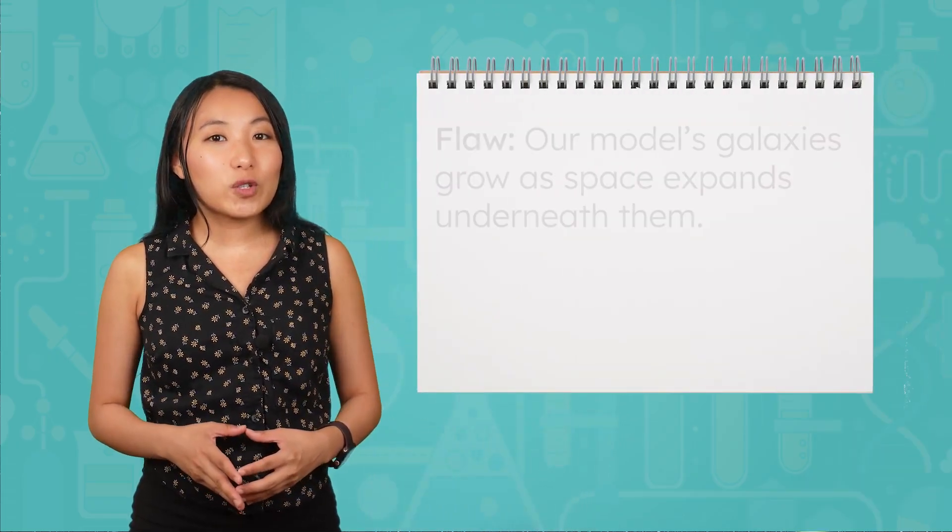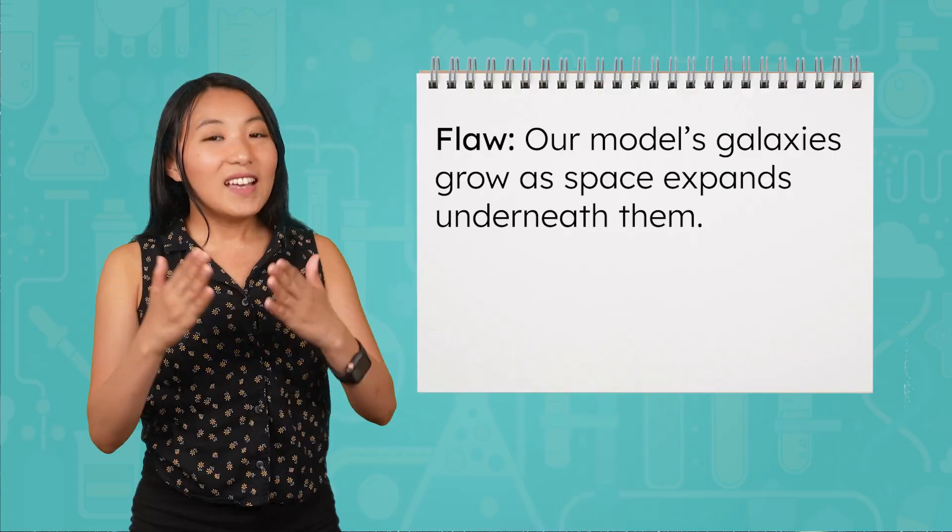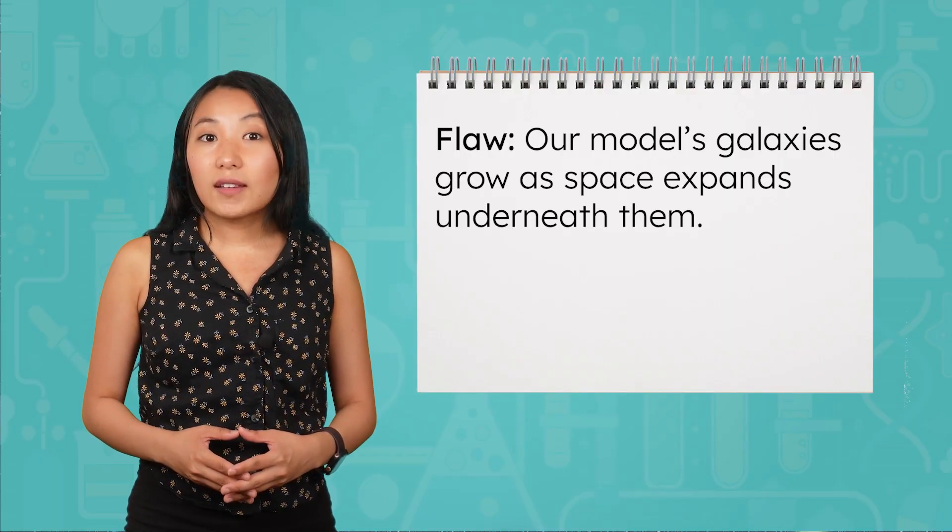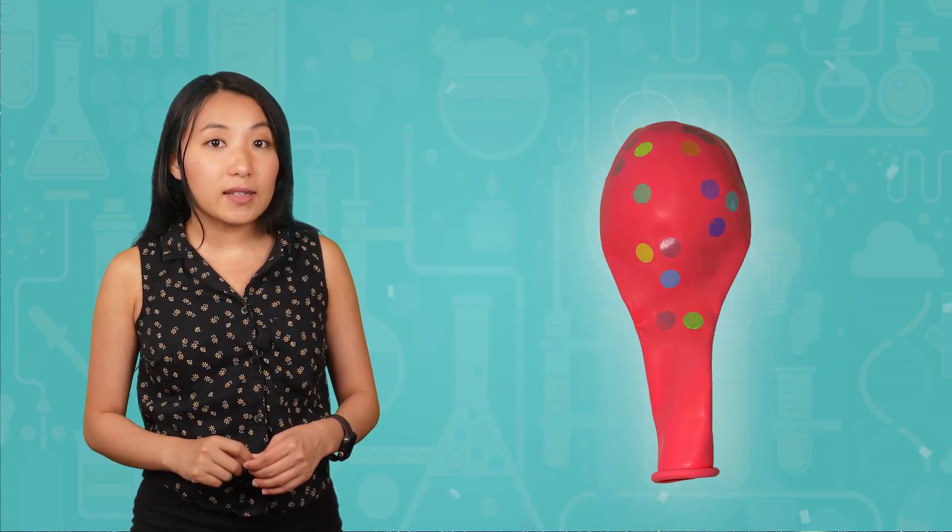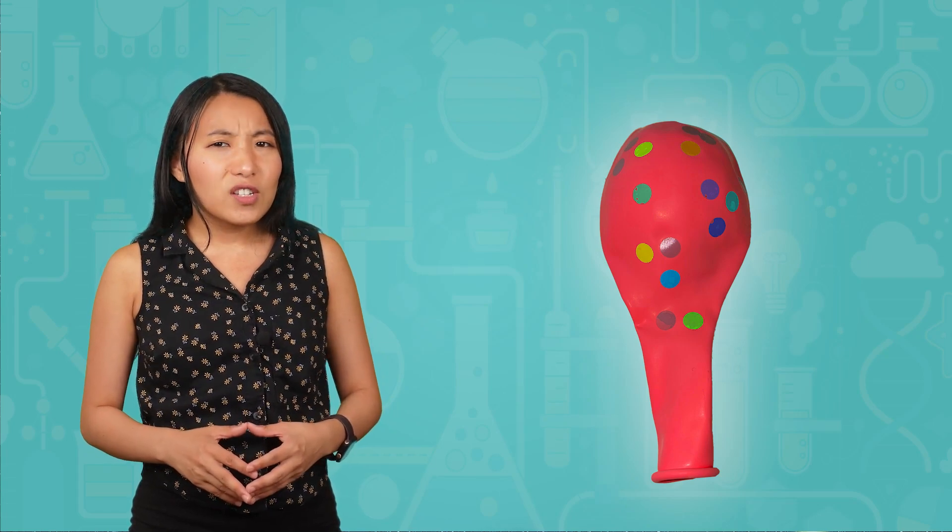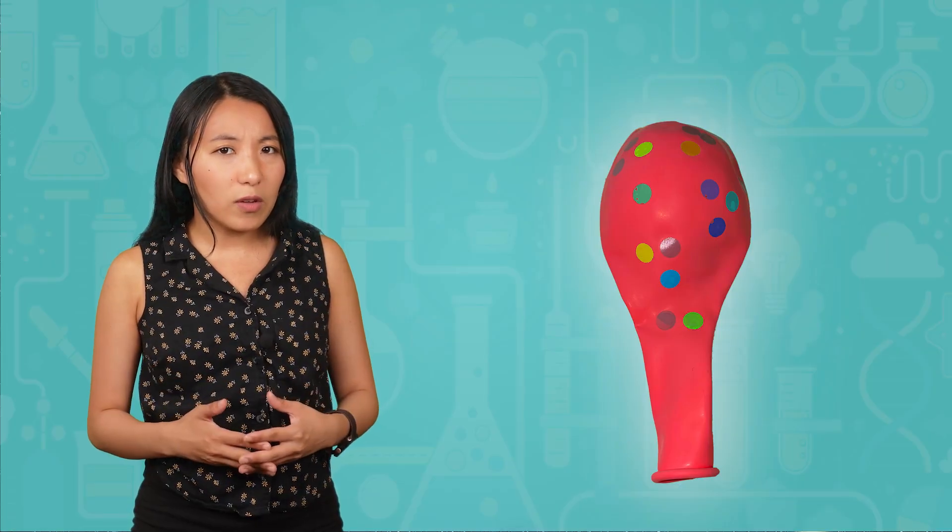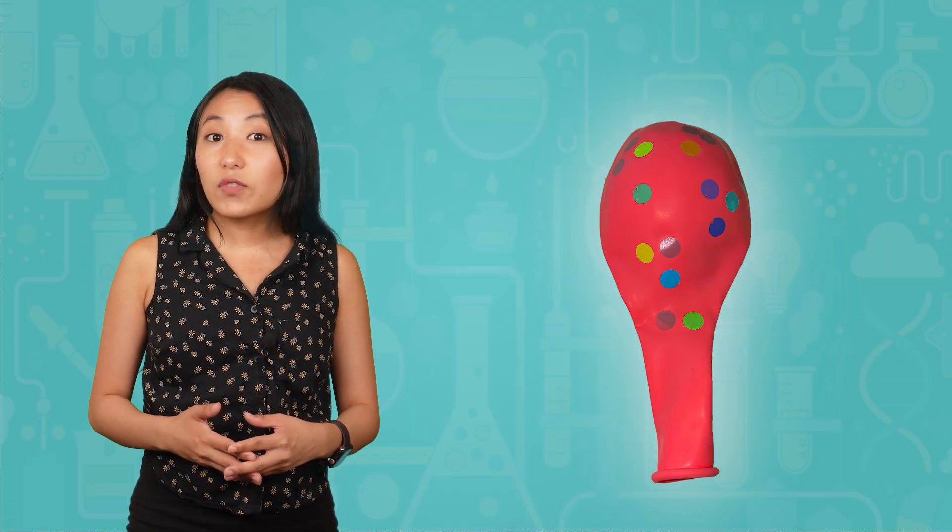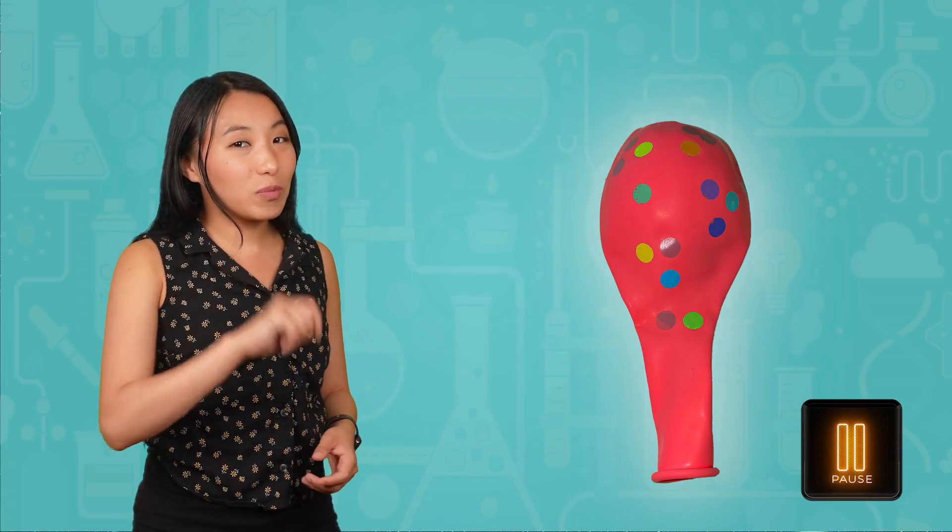Now that we've seen a flaw in our first model, that the galaxies seem to grow as space expands underneath them, it's time to make an improvement. Instead of drawing galaxies with a marker, grab your sticker dots. Place your sticker dots on the uninflated balloon to represent galaxies. Try to arrange them in a similar pattern to what you did before. Do you think using sticker dots instead of dots drawn with a marker will improve our model? What advantage will these sticker dots have that might fix our flaw? Pause the video for a moment and record some thoughts. We'll see if our observations match your predictions.